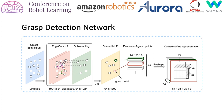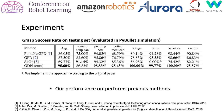This is the architecture of GDN. It has a structure like PointNet++. Given the input point cloud, the output is the C2F grasp representation.